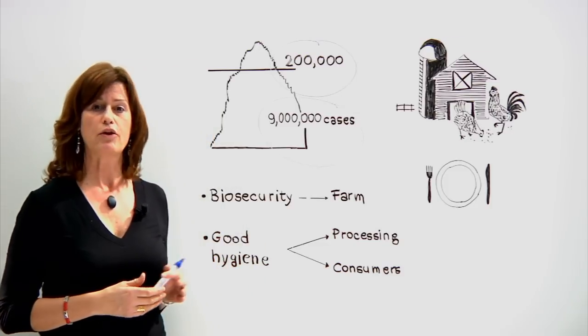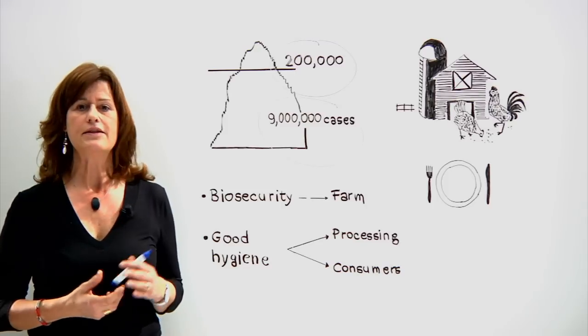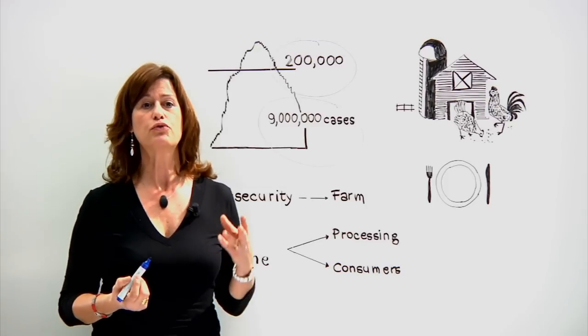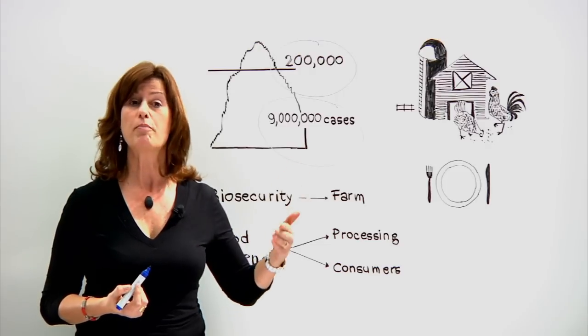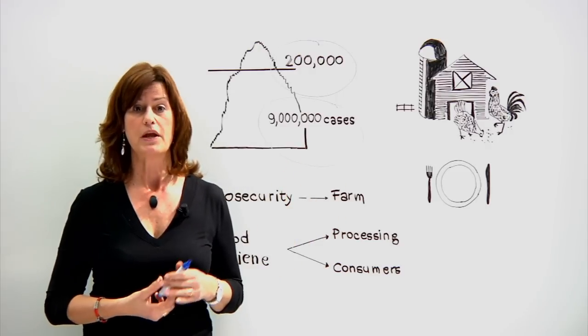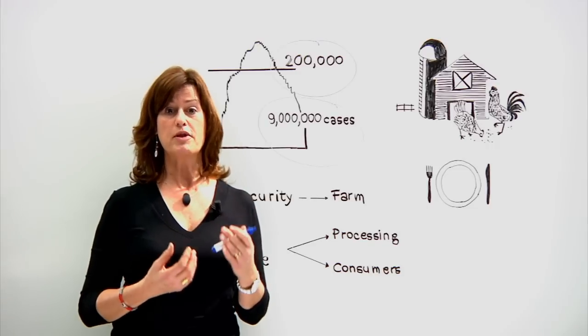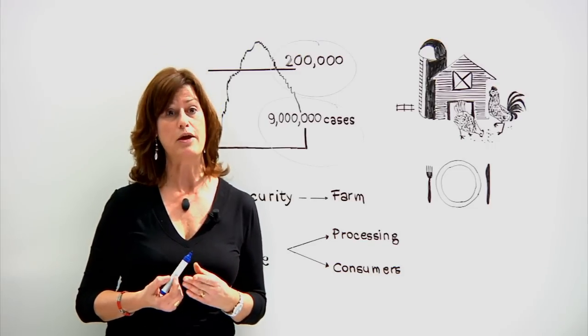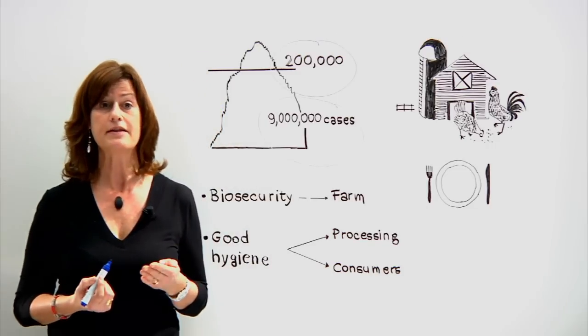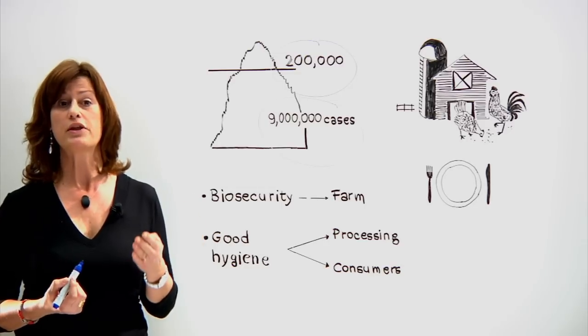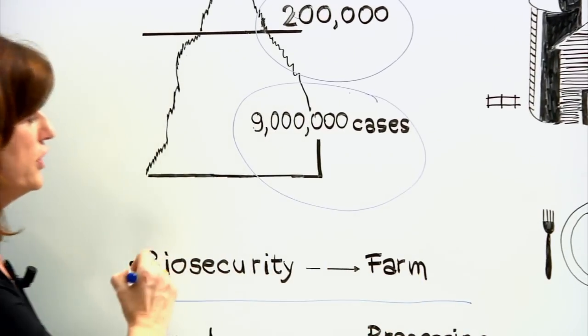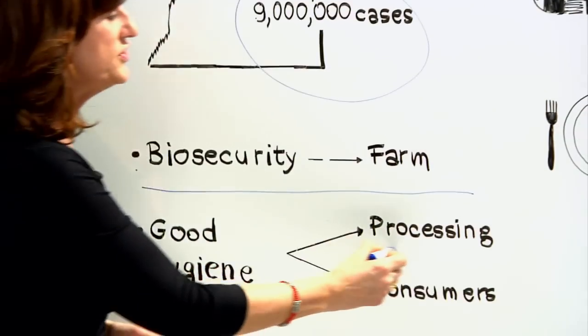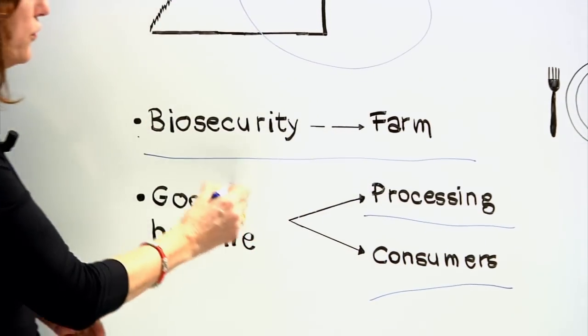To combat Campylobacter in the European Union, it's important to reduce the number of animals infected and the number of bacteria living in the animals. To protect consumers from the public health threat that is Campylobacter, EFSA has identified the most important risk factors that go from the farm, biosecurity at the farm, to processing, and to the consumer level through good hygiene.